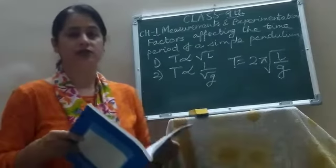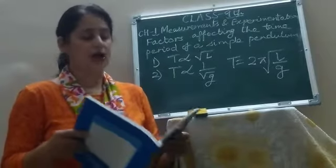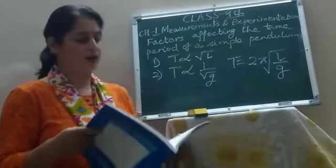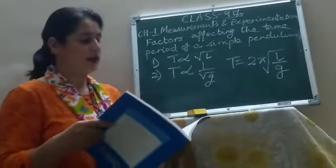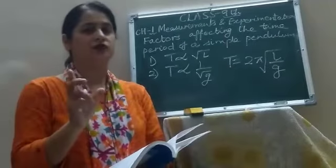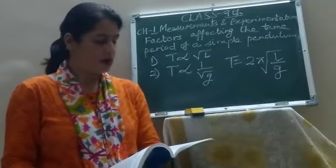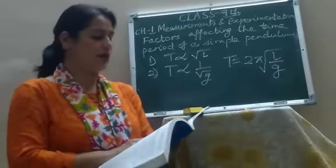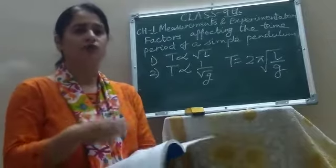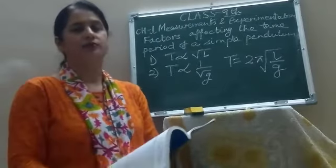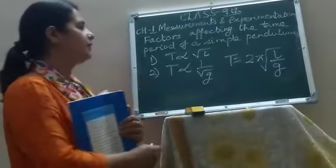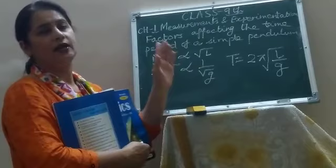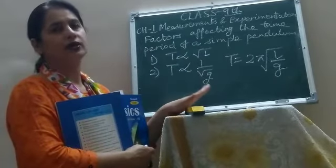The time period of oscillation of a simple pendulum does not depend on the mass of the bob or the material of the bob. If we take two pendulums of equal lengths but with bobs of different masses, the time period will be the same, even if the material is different, because the time period depends on the effective length. Similarly, the time period does not depend on the extent of swing — that means the amplitude of the simple pendulum — provided the swing is not very large. For small swings, the time period does not depend upon the amplitude.